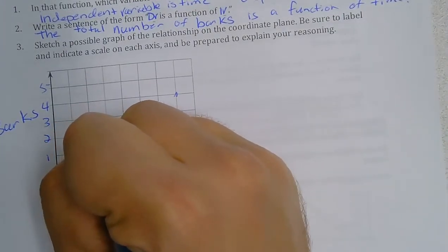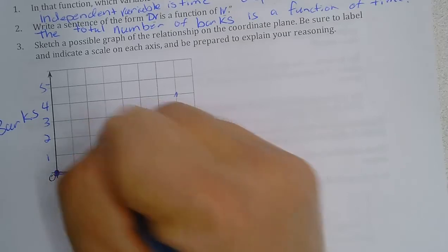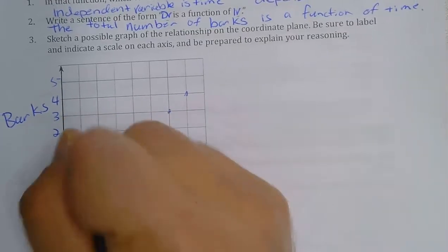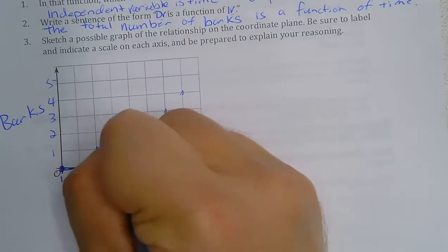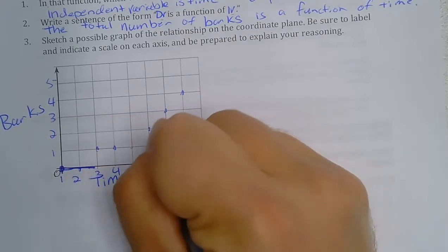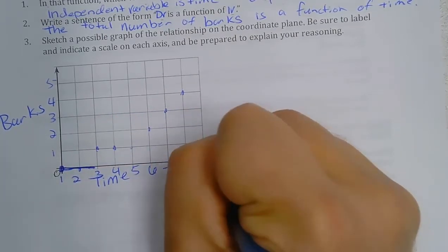And this would actually be an interesting look at a function. But if this were time, let's say seconds, so one second, two, three, four, five, six, seven, eight, and nine seconds.